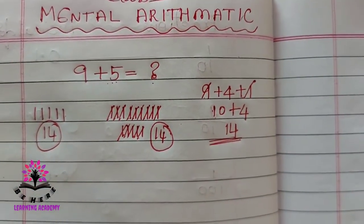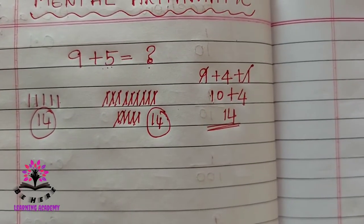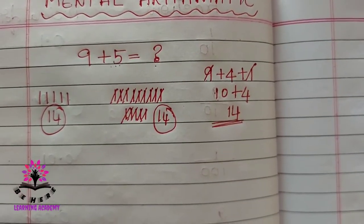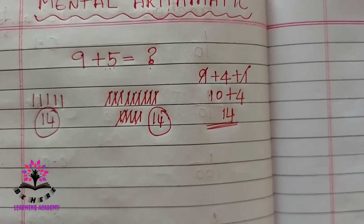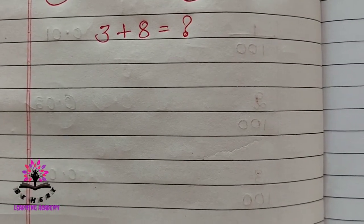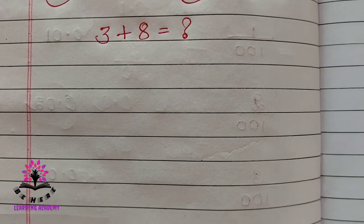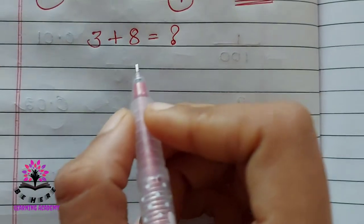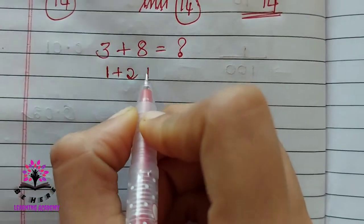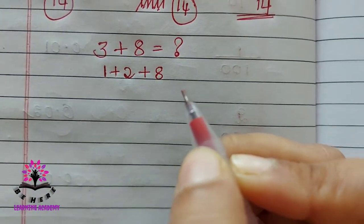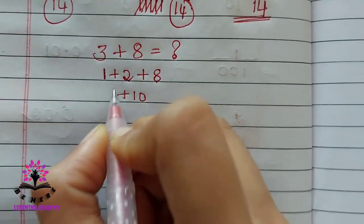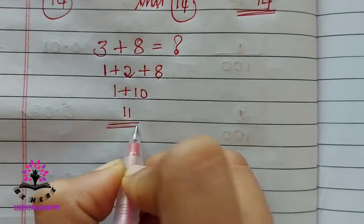Different people will use different methods to solve problems mentally. All of this is known as mental arithmetic. See the next problem: three plus eight equals how much? You can write three as one plus two, keeping eight as it is. Eight plus two is ten, then add one — it will be eleven.